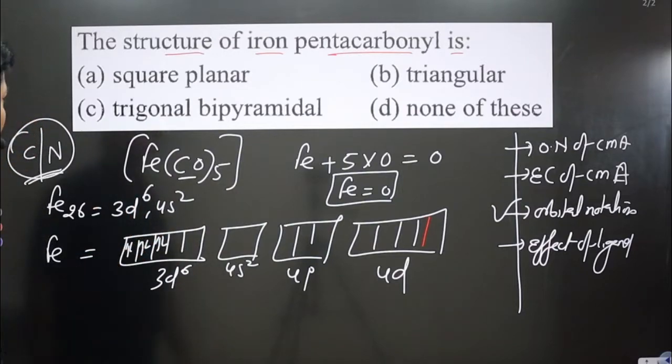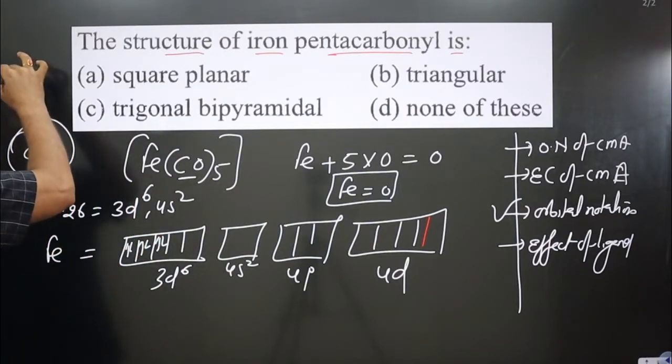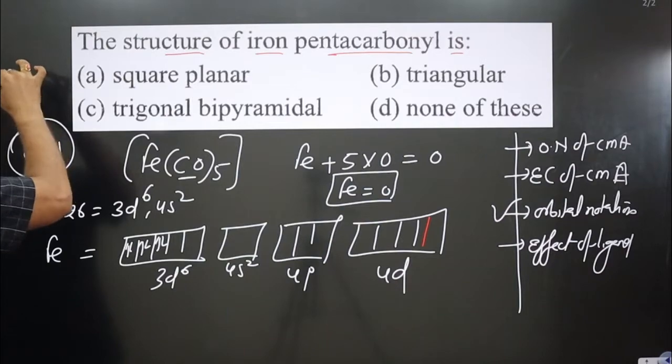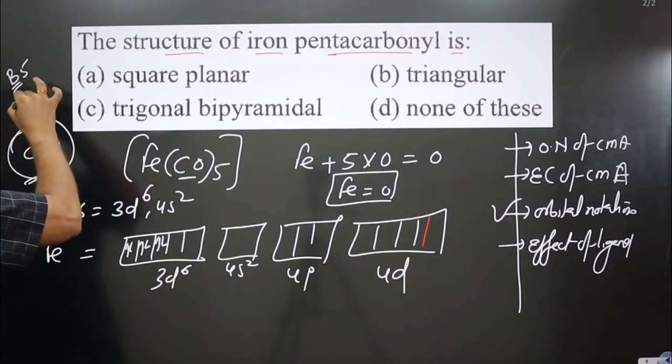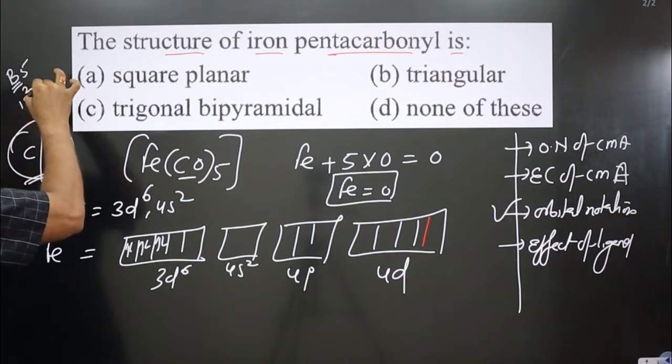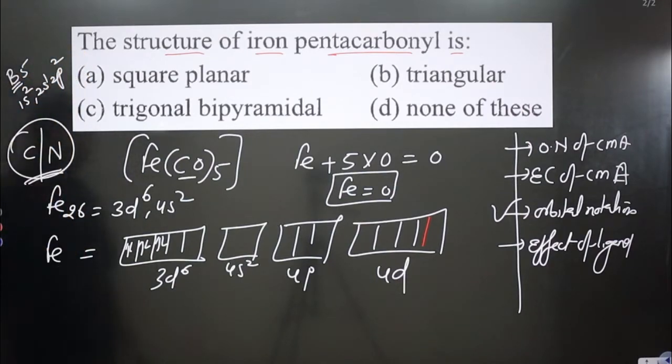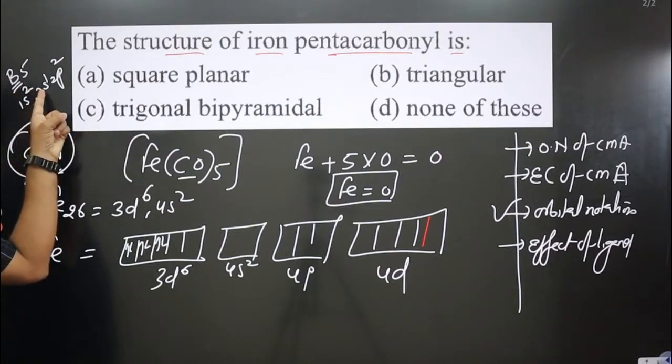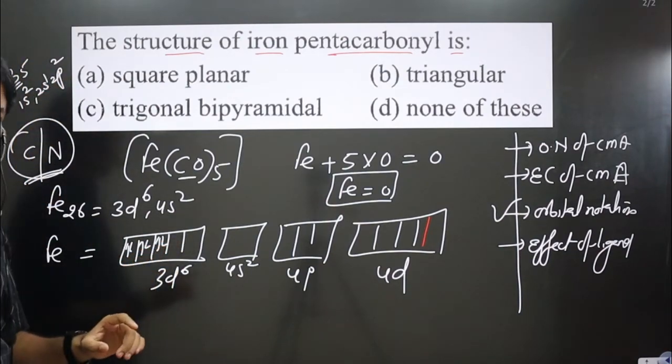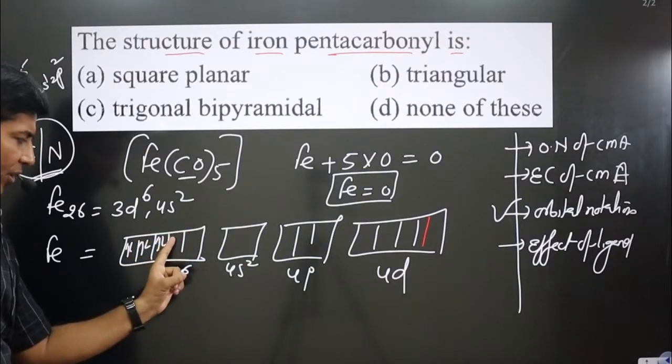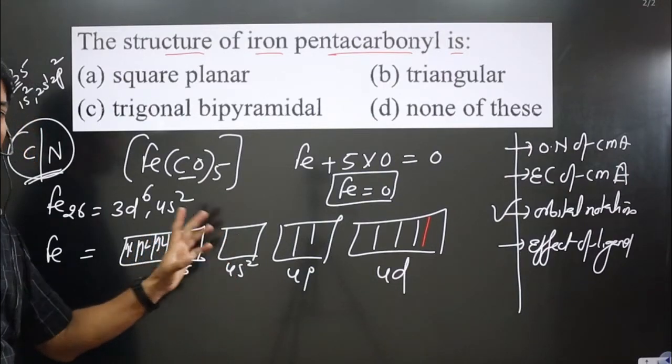Before filling these two vacant orbitals, we cannot start filling this orbital. This is the aufbau principle you might have learned. For example, with boron (atomic number 5), we write 1s2 2s2 2p1. You cannot start filling the p orbital before filling the s orbital. You need to fill the s orbital, then you can fill the next orbital. You cannot start filling this orbital keeping the vacant orbital empty.